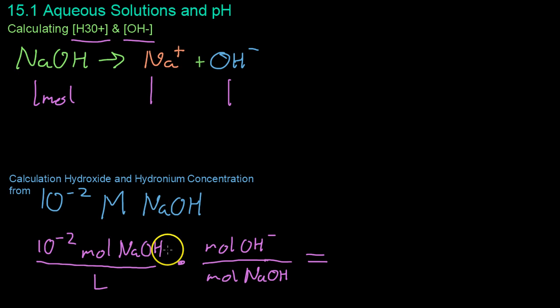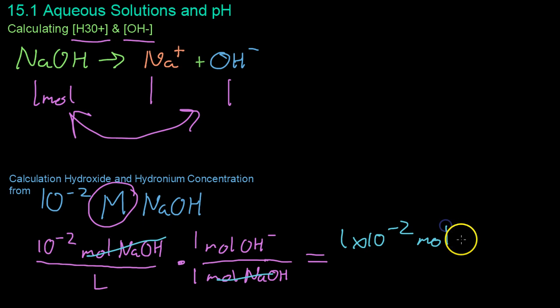You start off with your 10 to the minus 2 moles per liter by the definition of molarity. Because it completely dissociates, you have this one-to-one ratio of sodium hydroxide to hydroxide ions. These cancel out, and you end up with 1 times 10 to the negative 2 molar solution of hydroxide ions.